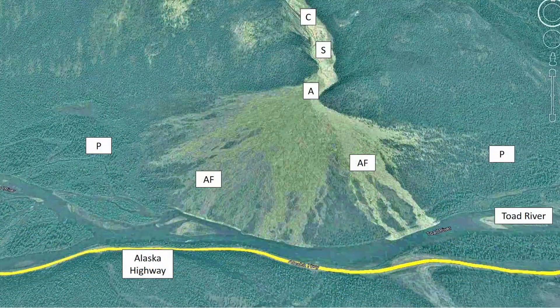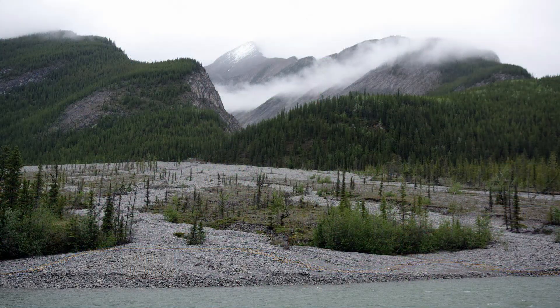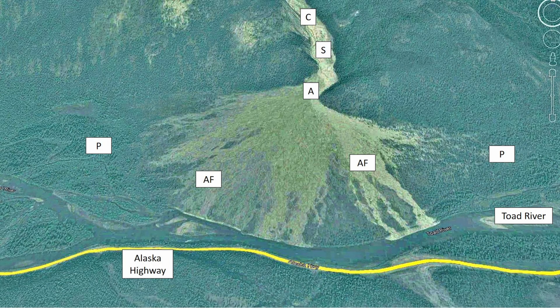On this Google Earth image the alluvial fan is labeled AF. The Toad River alluvial fan is cone-shaped and consists of sediments that fan outwards from a concentrated source of sediment. That concentrated source of sedimentary material is labeled with the letter S on this photo.